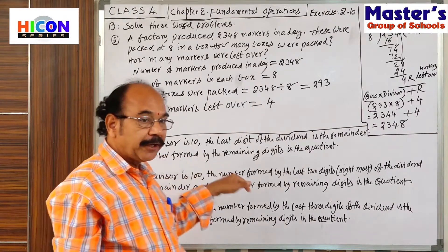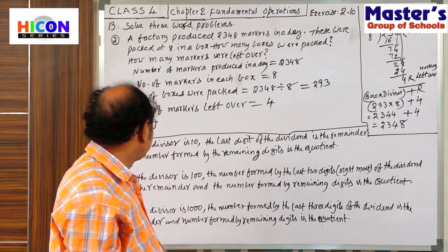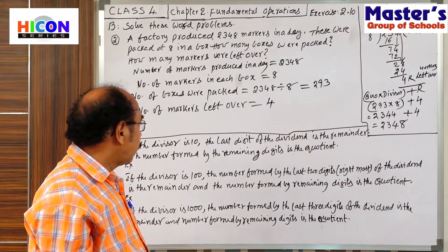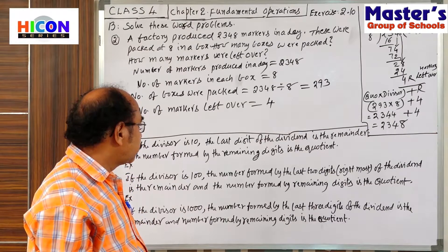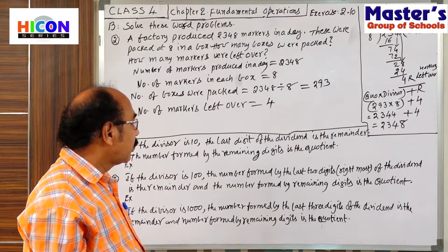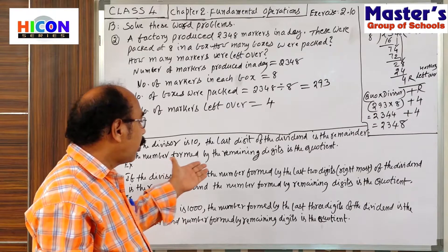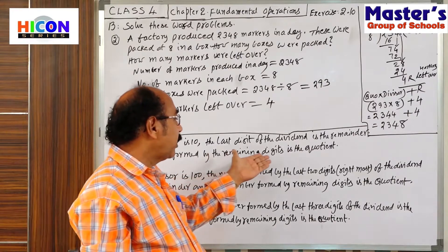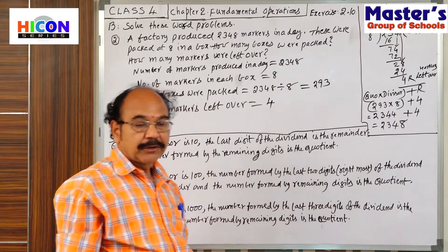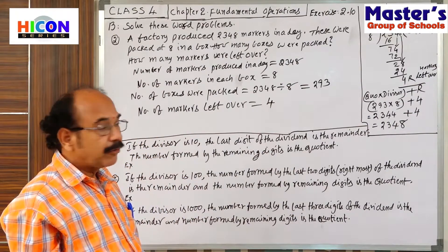If the divisor is 10, the last digit of the dividend is the remainder. The number formed by the remaining digits is the quotient. That point we told.